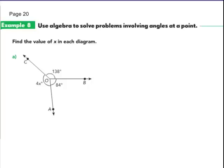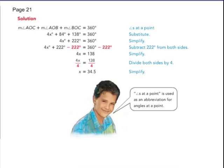Use algebra to solve problems with angles at a point. Find the value of x in each diagram. So we have 138 plus 84 plus 4x has to equal 360. Remember this picture. On the next slide is the work that's done for you. So the 138, the 84, and the 4x has to equal 360. Put our like terms together, which is the 84 and the 138. Subtract 222 from both sides. Dividing by 4, you get that x is 34 and a half. We've gotten the goal.